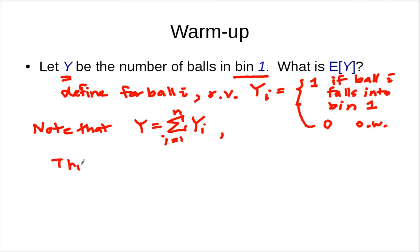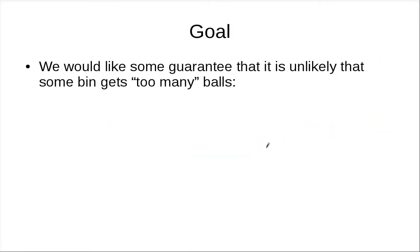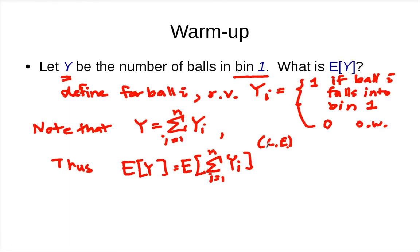So that's expected value of Y equals the expected value of the sum of Yi. And because of the linearity of expectation, this is equal to the sum of the expectation. So the expectation of the sum equals the sum of the expectation.